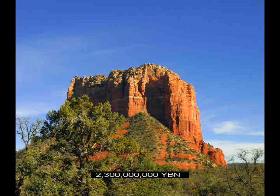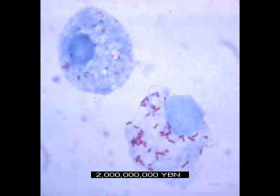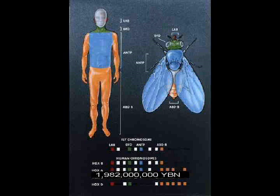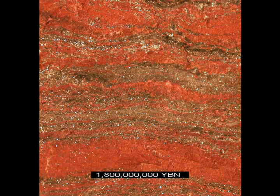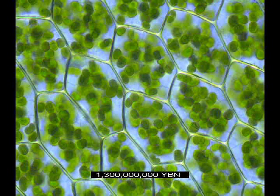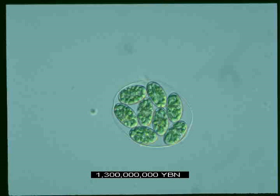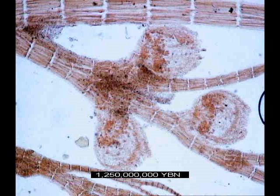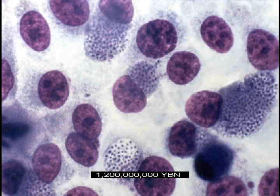Oldest red beds — evidence of free oxygen in the air. A captured bacterium becomes a mitochondrion. Homeobox genes regulate the building of major body parts. End of banded iron formation. Multicellular eukaryotes. Cyanobacteria become plastids in a eukaryotic cell. First plant. Differentiation in multicellular eukaryote — gamete or spore cells and somatic cells — start of death by aging. First fungi.